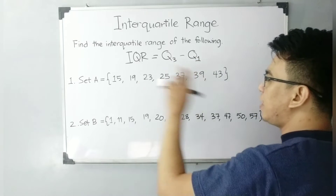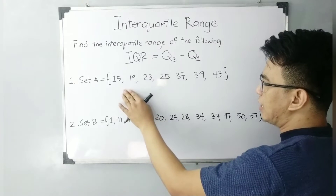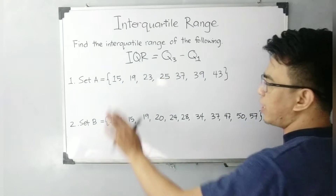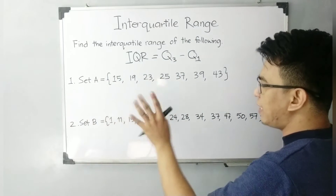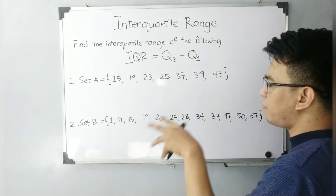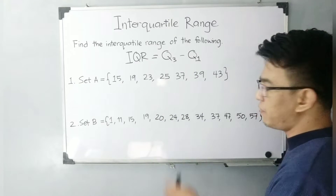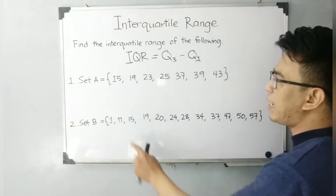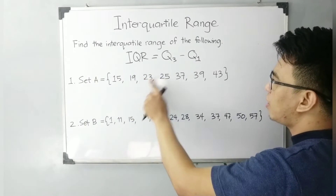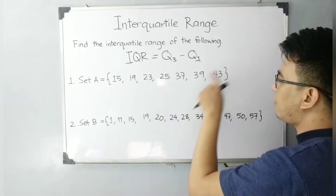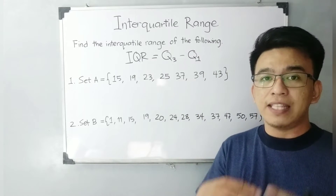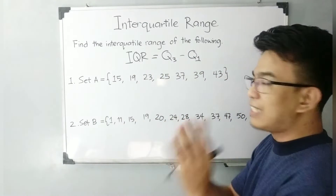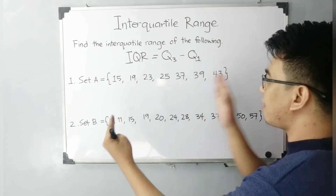I have here two given data sets. The first data set has an odd number of elements, and set B is a given data set wherein the number of elements is an even number. For set A, we have 15, 19, 23, 25, 37, 39, and 43. First, you need to arrange the given data set in ascending order from least to greatest value.